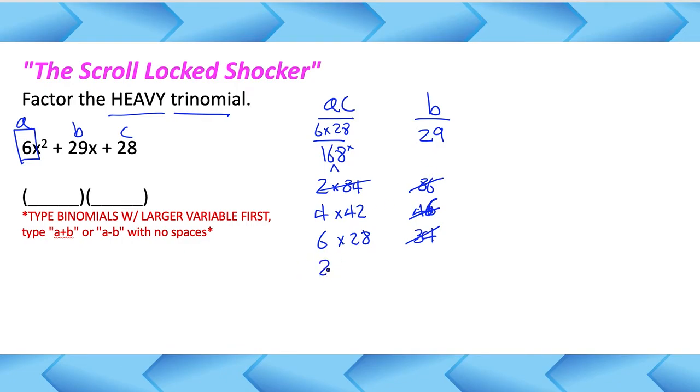Again this is just got to guess and check until you find it. I can take 168 and divide by 8. When I do that I get 21. 8 times 21 makes 168. 8 plus 21 makes 29. So I got them. There's my magic numbers right there. 8 and 21.